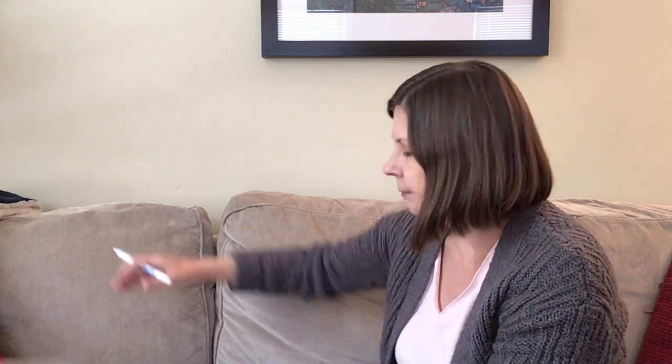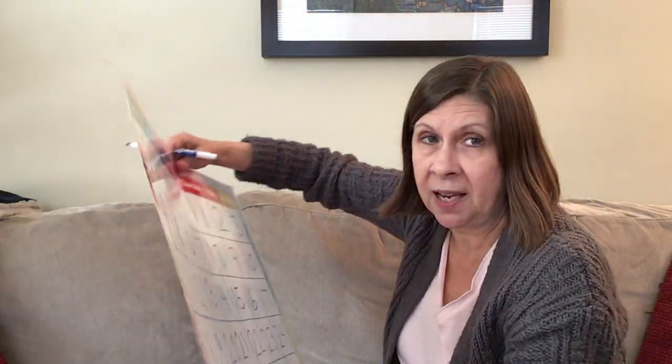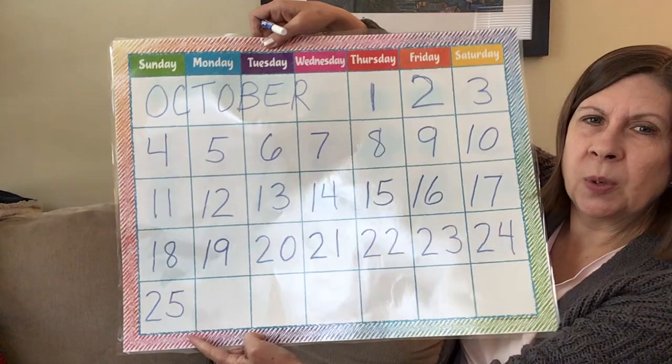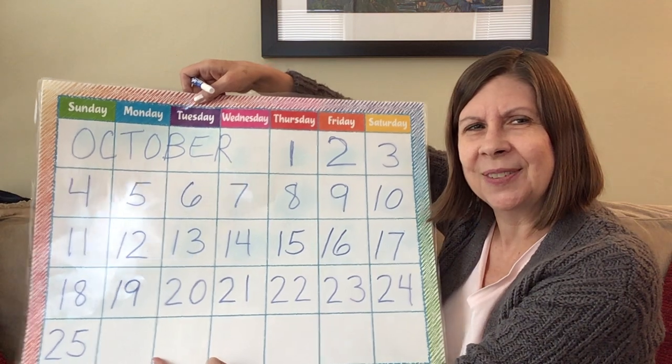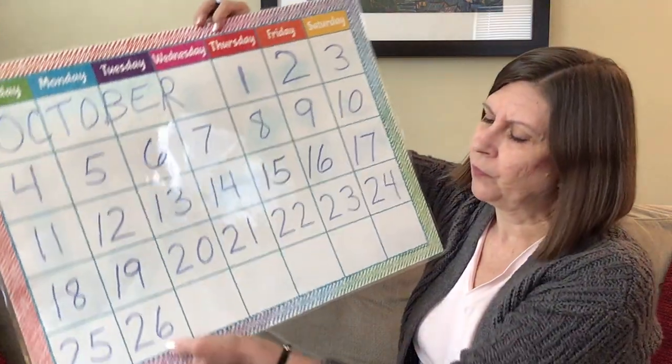So on Saturday it was 24. I'll make a 2 and a 4. And then yesterday, Sunday was 25. So I need to make a 2 and a 5 for 25. So what do you think today is? What comes after 25? That's right, 26. So I'm going to make a 2 and a 6 for 26.